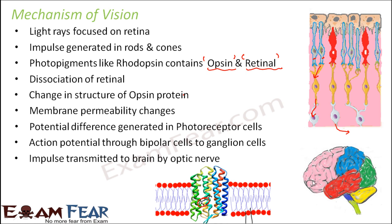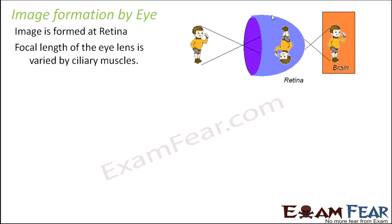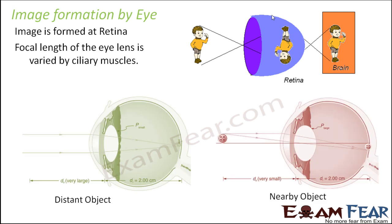This is the mechanism of vision — how we are able to see different objects and interpret them. The image formed on the retina is a real and inverted image. When transferred to the brain through the optic nerve, it is interpreted and corrected by the brain. The focal length of the eye lens is varied by the ciliary muscles, and this is how image formation takes place.